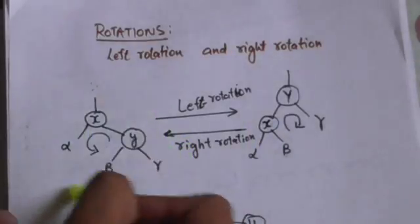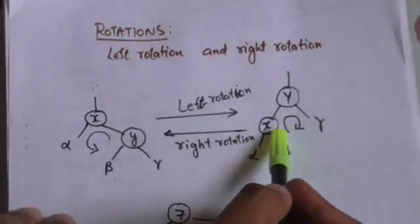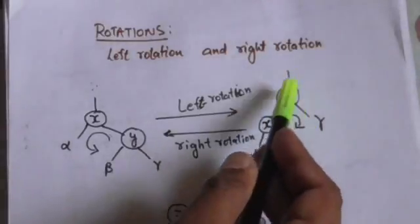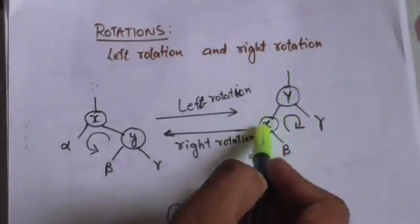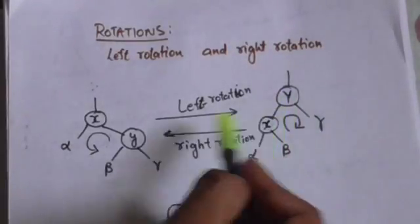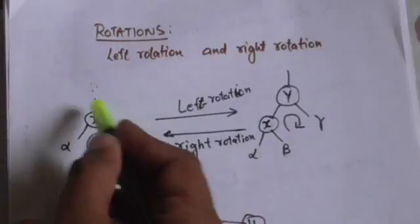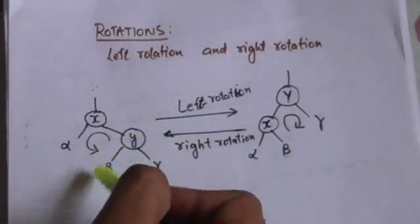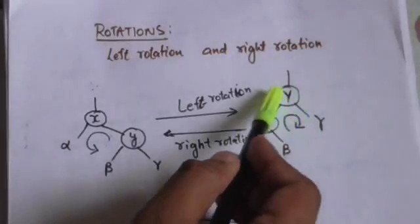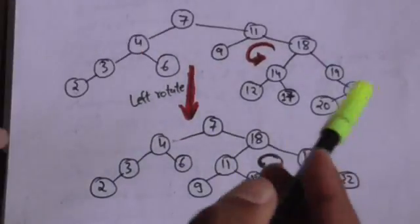After doing left rotation on node x, we get the resulting sub-tree. Now if we do a right rotation on node y, its left child — node x — will become the root of the sub-tree. Node y will become the right child of node x, and the right child of node x will become the left child of node y.